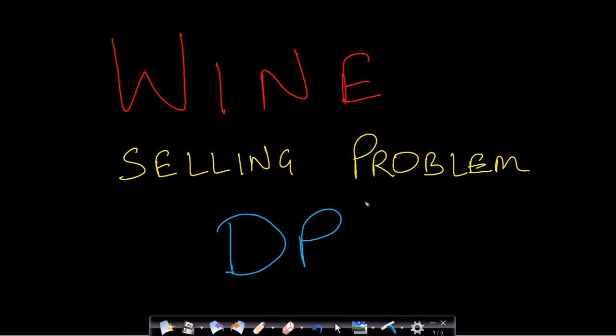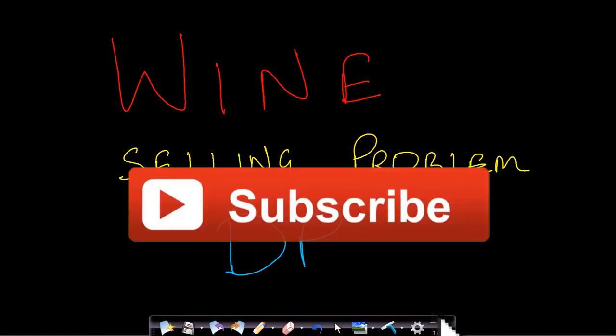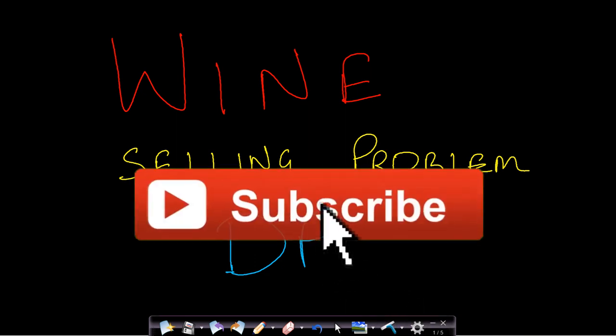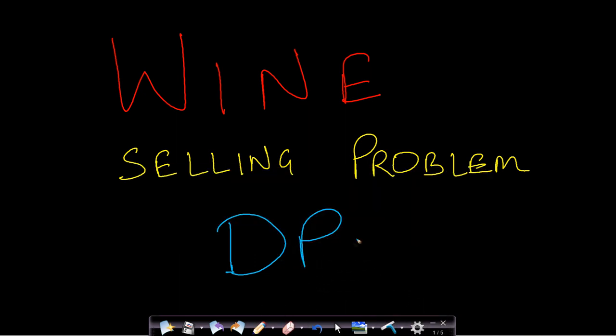Hello guys, welcome back to Tech Dose. In this video we will see the wine selling problem and we will solve this problem by using backtracking as well as dynamic programming. Let us look at the problem statement.